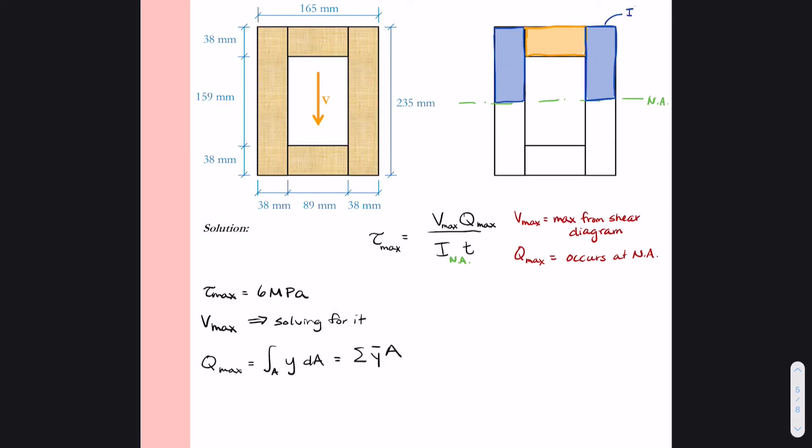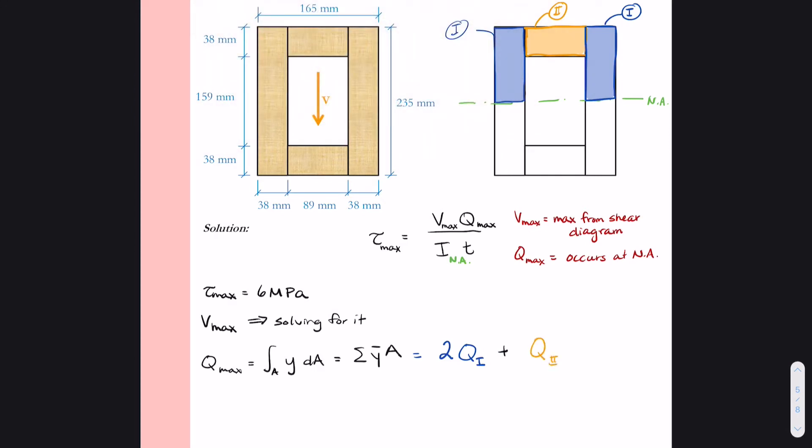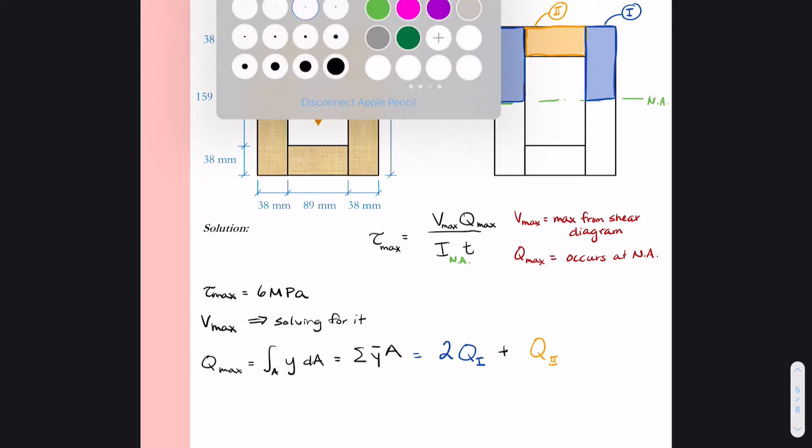I'll call the blue area shape 1 and I'll call the orange area shape 2. And when we do our calculations, we have to keep in mind that we have two shape 1s. So when we're calculating Q, I think we're going to calculate Q for area 1 but multiply it by 2 because we have two of them. And then we're going to add to that Q for area 2.